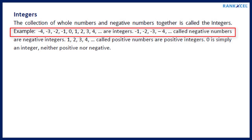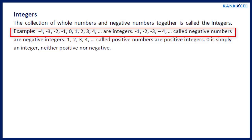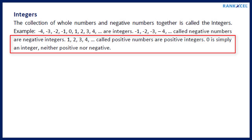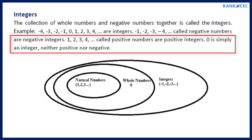Minus 1, minus 2, minus 3, minus 4 are called negative numbers or negative integers. 1, 2, 3, 4 are called positive numbers or positive integers. Zero is simply an integer — neither positive nor negative.